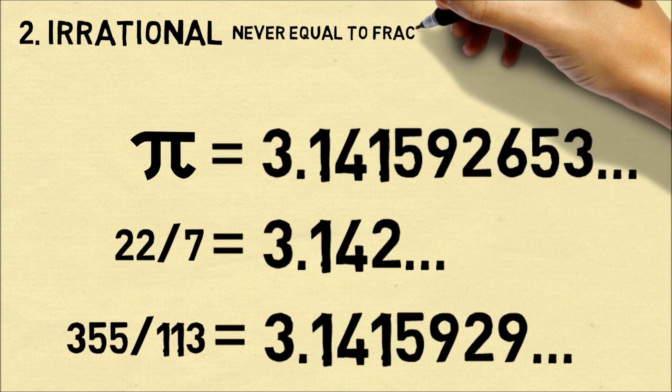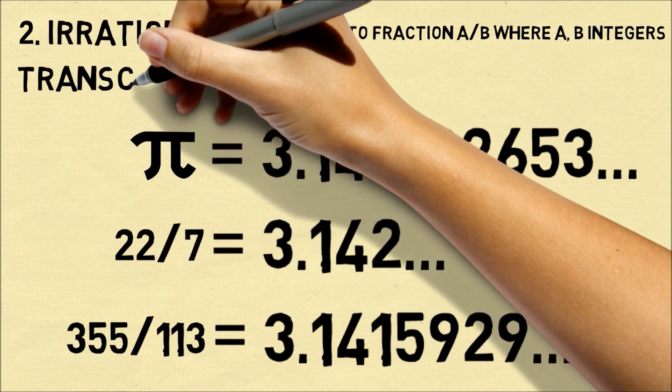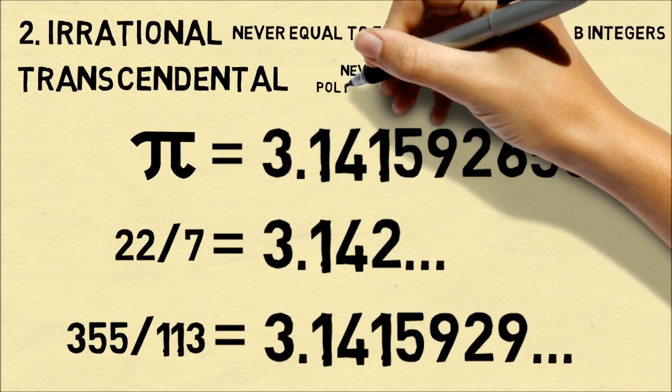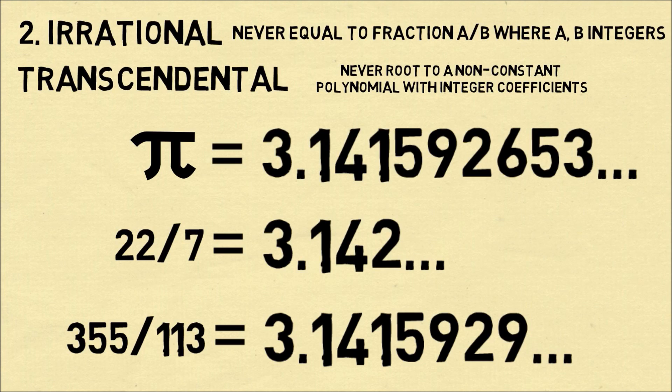But because pi is irrational, there is no fraction a over b where a and b are integers that will be exactly equal to pi. Pi is also transcendental, which means pi will never be the root or the solution of a non-constant polynomial with integer coefficients.